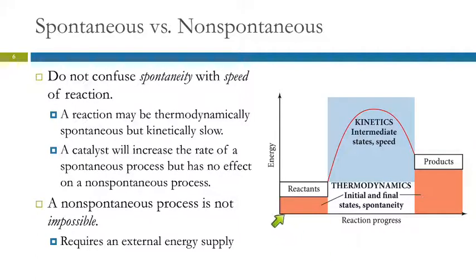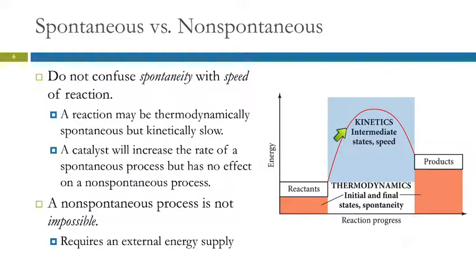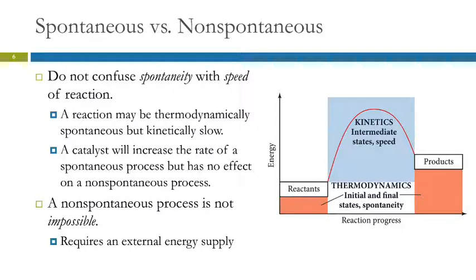Here we have an energy diagram — reactants, products, our initial and final states. Thermodynamics is the subject of this chapter, and that's the study of spontaneity of reactions: is this reaction going to happen on its own or not? Kinetics, which is what we talked about in chapter 14, has to do with how fast the reaction goes — we're looking at the intermediate states. So thermodynamics looks at initial and final states and whether the reaction is spontaneous.